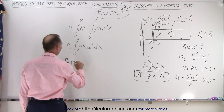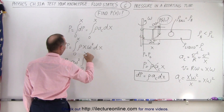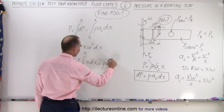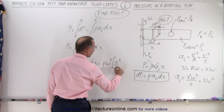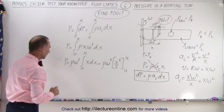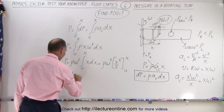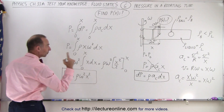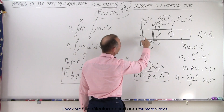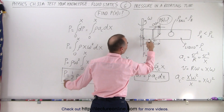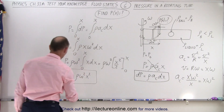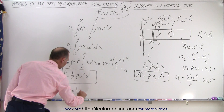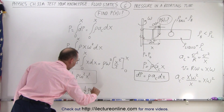The pressure equals the density times omega squared times the integral from zero to x of x dx. That integrates to density times omega squared times x squared over two, evaluated from zero to x. So the pressure due to rotation is equal to one-half times the density times omega squared times x squared. We then realize that the pressure already starts at some initial pressure P-naught, and this is the additional pressure due to the distance away from the axis of rotation. So the total pressure is P-naught plus one-half times density times omega squared times x squared.